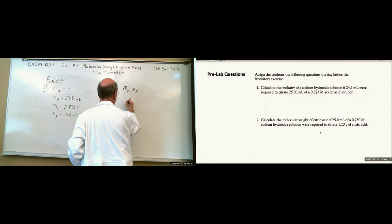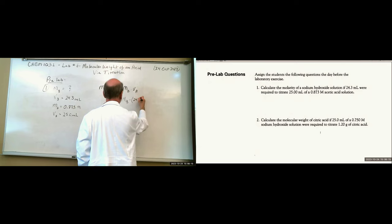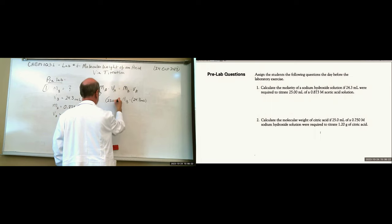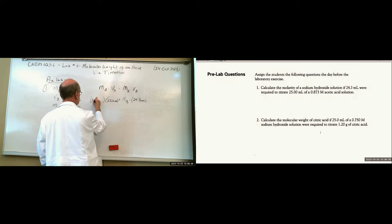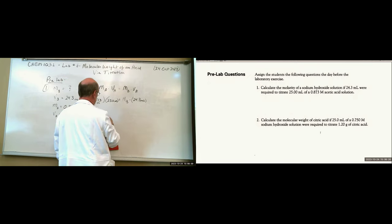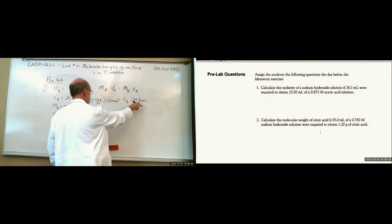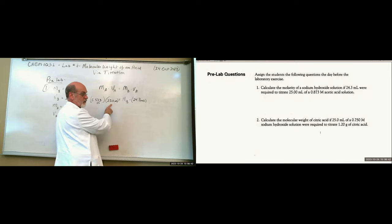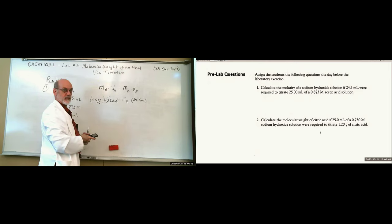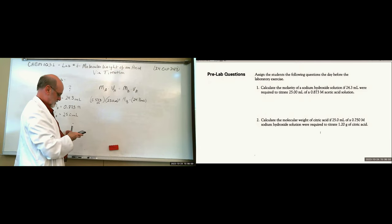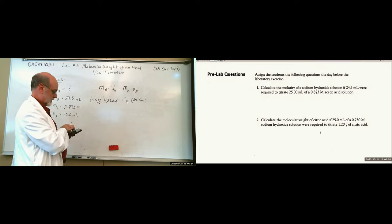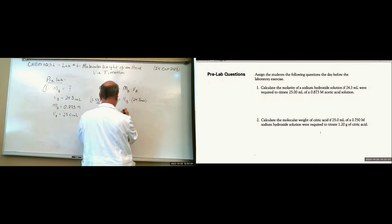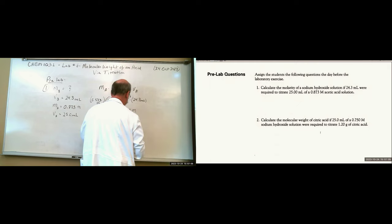Molarity of the base is unknown; volume of the base is 24.3 milliliters; volume of acid is 25 milliliters; molarity of acid is 0.873 molar. Solving: 25 times 0.873 divided by 24.3 — this value will be greater than 0.873 since we're dividing by a smaller number. Molarity of the base equals 0.898 molar.